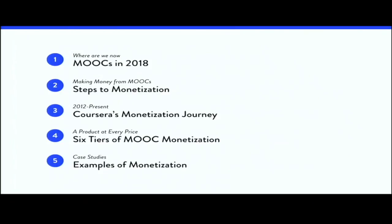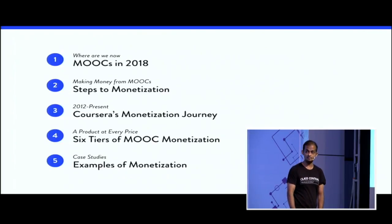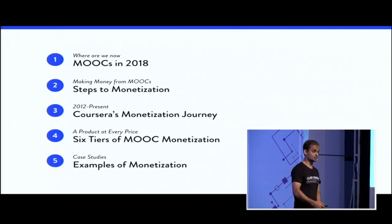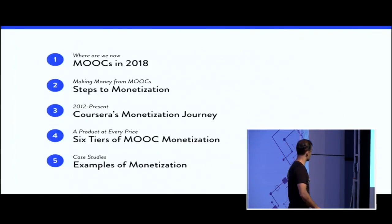This is how the agenda looks for the rest of the talk. I'll start by telling you about the state of MOOCs. Then I'll talk about what changes MOOC providers have done — the four steps of monetization. Then we'll go through a specific example from Coursera, which is the largest MOOC provider in the world. After that, I'll summarize the MOOC monetization model into six different pricing tiers, then quickly look through a few examples of certain universities and companies and how much they are making.